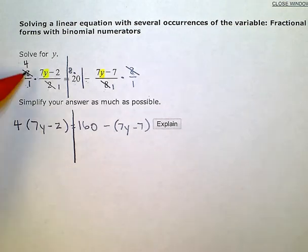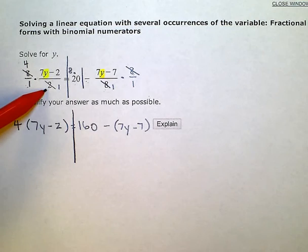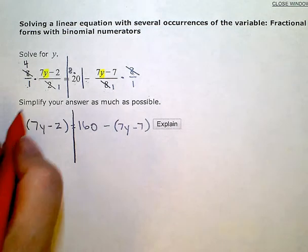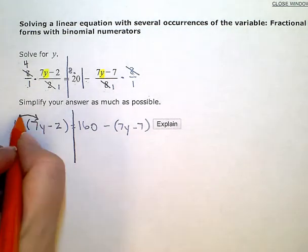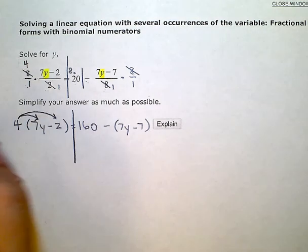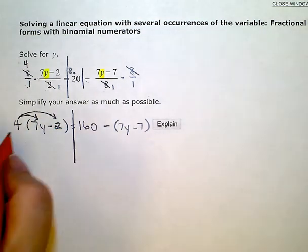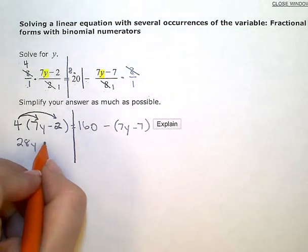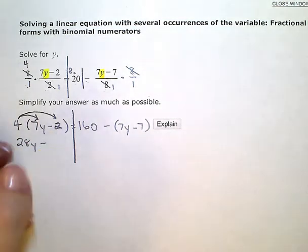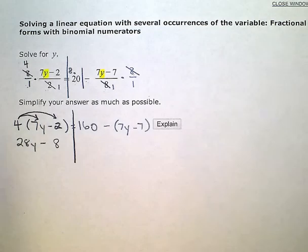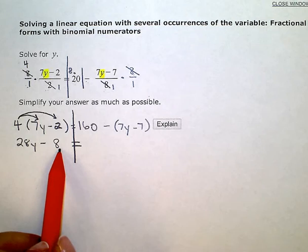Now that I've gotten rid of the denominators and the big fraction bars, now I'm going to simplify each side separately. Over here on the left, I'm going to distribute. This is a 2 here, not a z. 4 times 7y is 28y minus 4 times 2 is 8. These are not like terms, so I can't combine them.